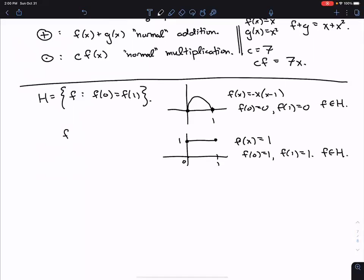Things that are not allowed are things like F(x) equals x. Because now F(0) is zero, but F(1) is one. And so this F would not be in H.